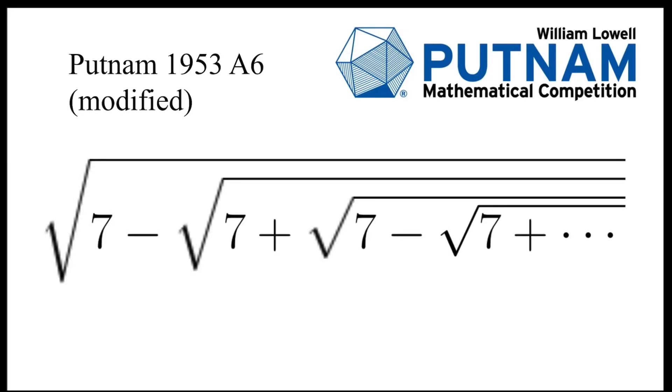Let's take a look at this problem modified from Putnam 1953. To evaluate the square root of 7 minus the square root of 7 plus square root of 7 minus the square root of 7 plus, and we do this until infinity.